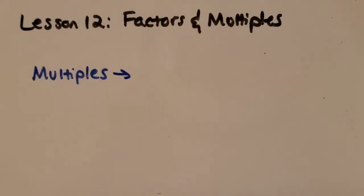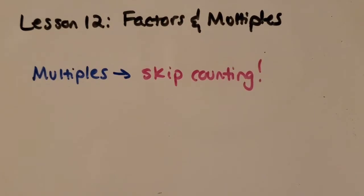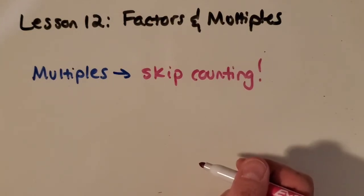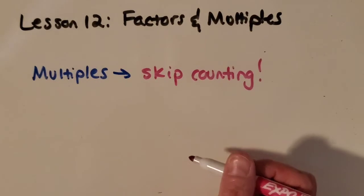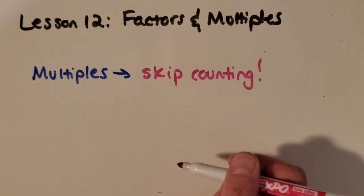So the first thing I want to talk about are multiples. And multiples are just like skip counting. You've been doing that since you were really little. You were able to count by twos or threes or fives or tens. So you've been skip counting for a long time, so this should be pretty easy.